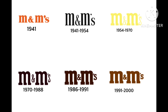1941: M&M's is launched, shown as just the word M&M's in orange text. 1941 to 1954: we have the word M&M's in black text with an ampersand between the M's, and the apostrophe and S looks smaller.